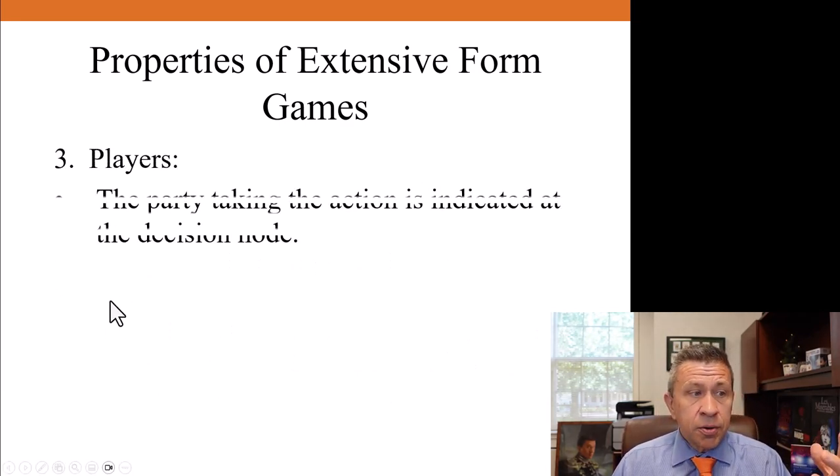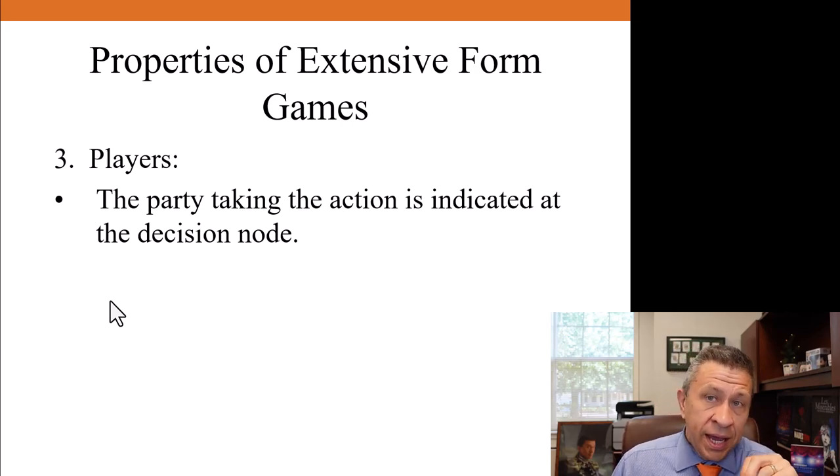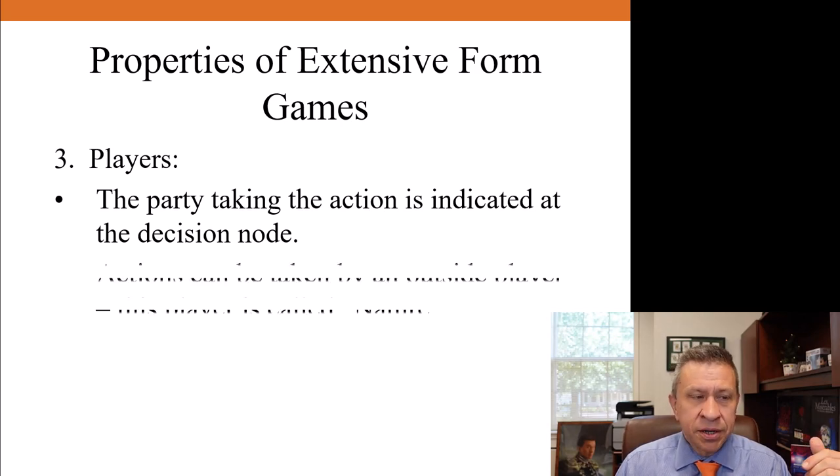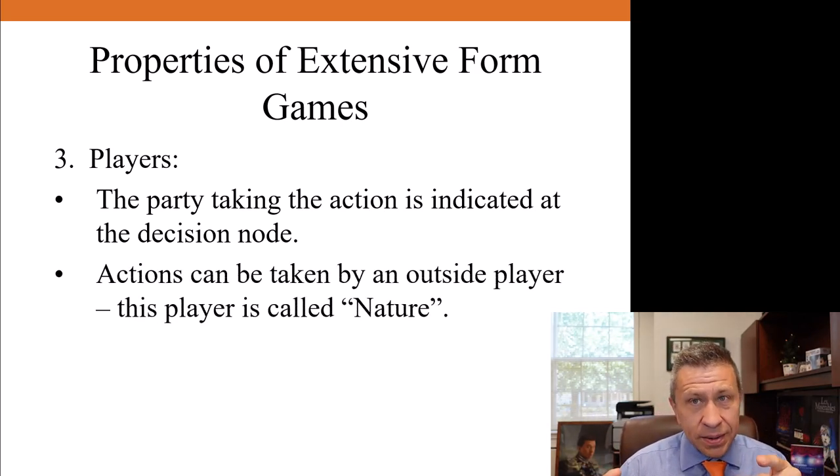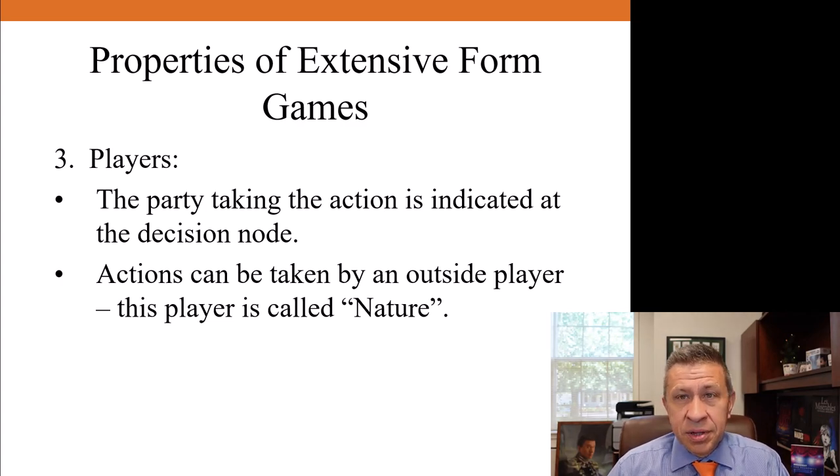There are players in a game, as we know. The party taking the action, the player who is making the decision, is indicated at the decision node. You would indicate the player's name or however the player is denoted at a particular decision node. Note, sometimes people other than the players in the games can influence the action. And if that is the case, we would just call that player nature. That taking nature literally, suppose you have a football game, and there is a decision on whether or not to kick a field goal. Nature being the wind could actually influence that. And if there are wind gusts, you can't really control. It's kind of blind luck. The outside, the nature, could have a gust that helps or harms a kick. It might not. It's an action taken by an outside player.